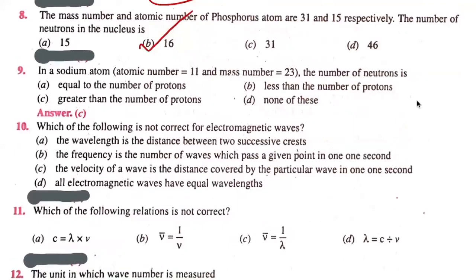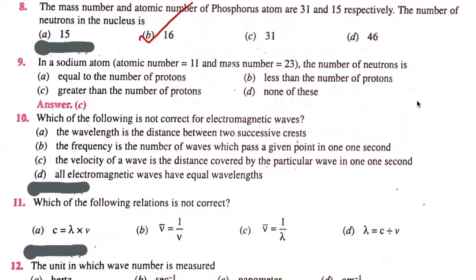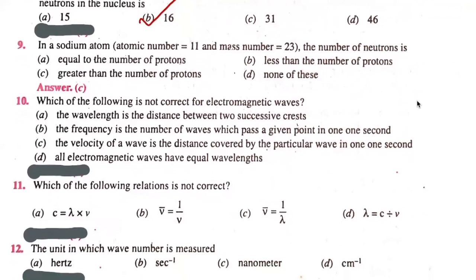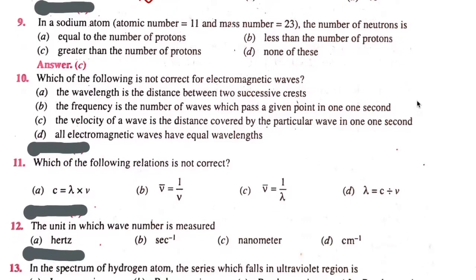Which of the following is not correct for electromagnetic waves? The wavelength is the distance between two successive points. The frequency is the number of waves which pass a given point in one second. The velocity of a wave is the distance covered by the wave in one second. All electromagnetic waves have equal wavelength — that is not correct. Option D is the correct answer.